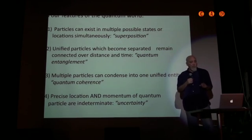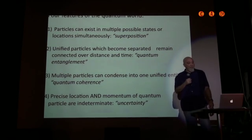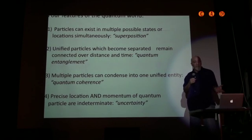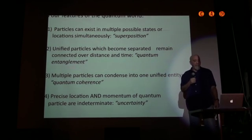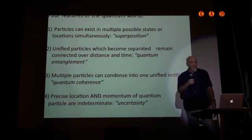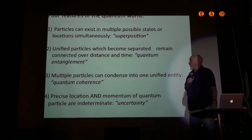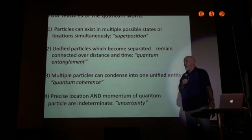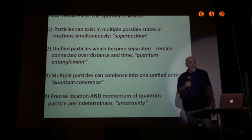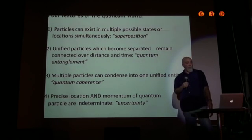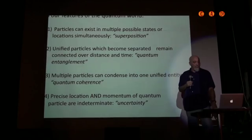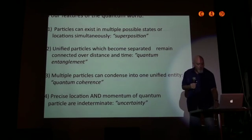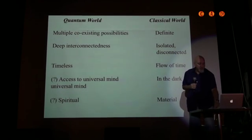So let me tell you a little bit about the quantum world. And I realize there's some quantum physicists in the room, so you'll see how we do here. But the first is that particles can exist in multiple states or locations simultaneously, superposition. They can also be connected when separated, connected over distance and time. This is entanglement. Multiple particles can condense into one, quantum coherence, and location and momentum are indeterminate together, uncertainty.